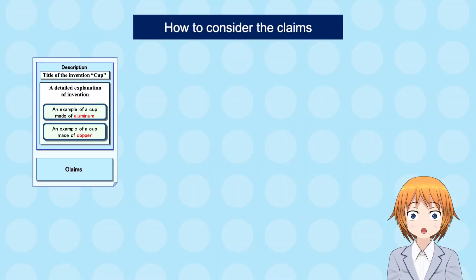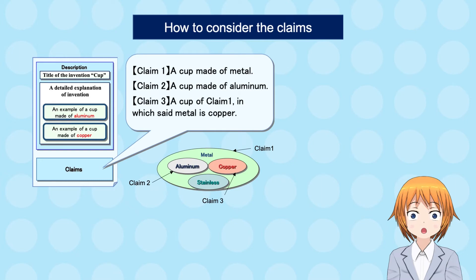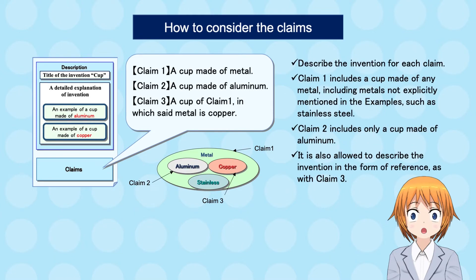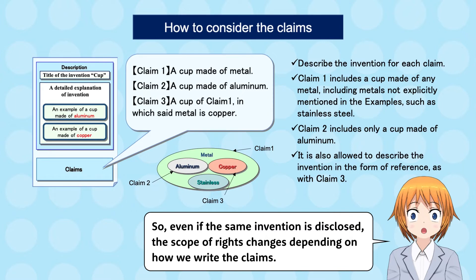How to consider the claims. This patent application includes three claims. Claim 1: a cup made of metal. Claim 2: a cup made of aluminum. Claim 3: a cup of claim 1 in which said metal is copper. Claim 1 includes a cup made of any metal, including metals not explicitly mentioned in the examples, such as stainless steel. Claim 2 includes only a cup made of aluminum. It is also allowed to describe the invention in the form of reference, as with claim 3. Even if the same invention is disclosed, the scope of rights changes depending on how we write the claims.